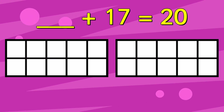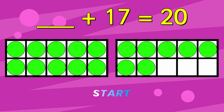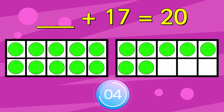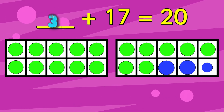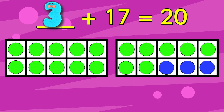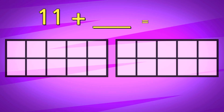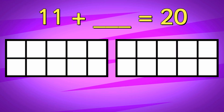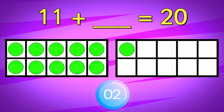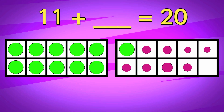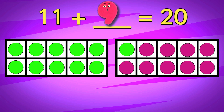Something add 17 equals 20. The answer is 3. 11 add something equals 20.